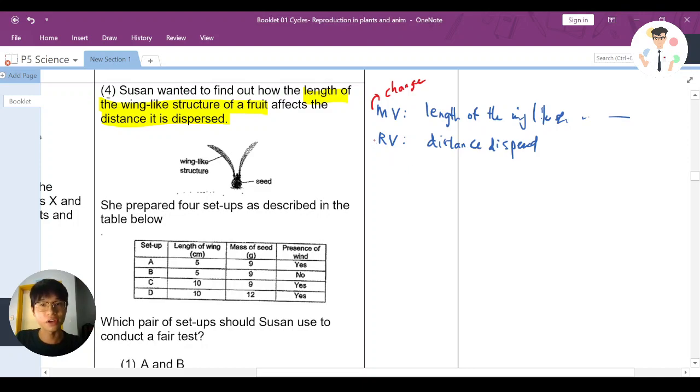RV, responding variable, basically means the one that we need to see what's the result. We need to observe. The things we need to observe and see here is the distance, right? Because we want to see how this change in the length affects the distance.